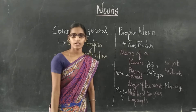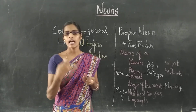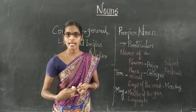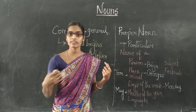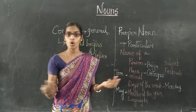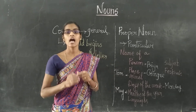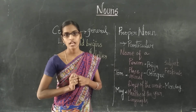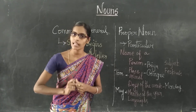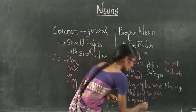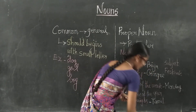Language names — we people are speaking different languages like Tamil, English, Urdu, Malayalam, Hindi. There are a large number of languages over the world, so the language's name also comes under Proper Noun. For example, our language is Tamil.